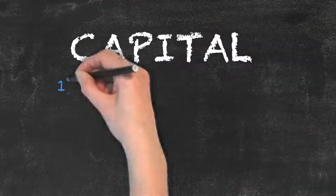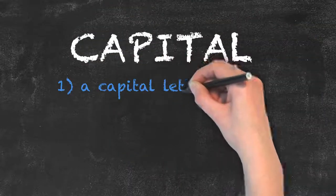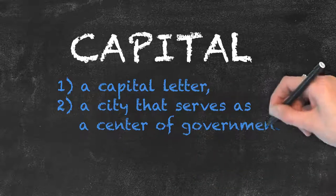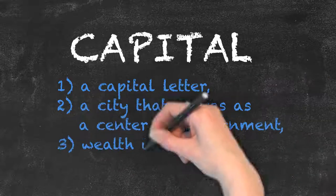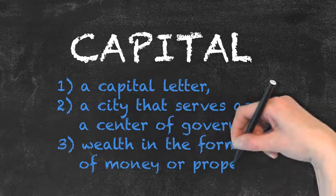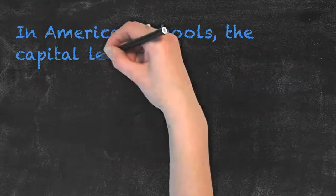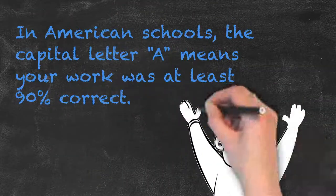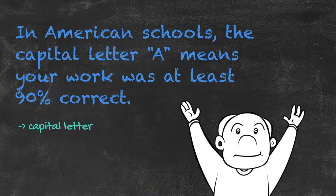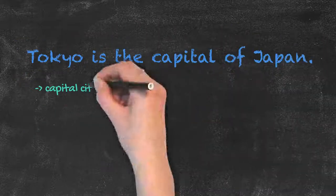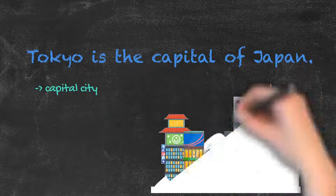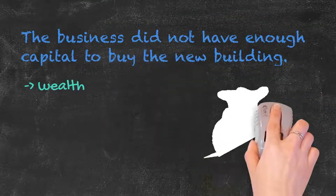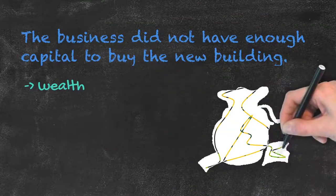The word 'capital' is used to refer to a capital letter, a city that serves as the center of government, and also wealth in the form of money or property. For example, in American schools the capital letter A means your work was at least 90% correct. Tokyo is the capital of Japan. The business did not have enough capital to buy the new building.